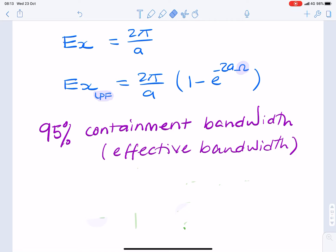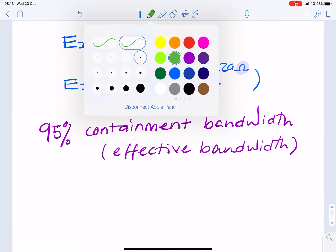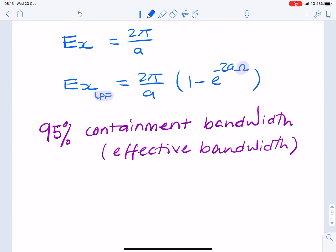So really, it's just a case of finding omega. We would say that the energy retained after filtering divided by the total energy is 95 over 100. So that's 1 minus e to the minus 2a omega.